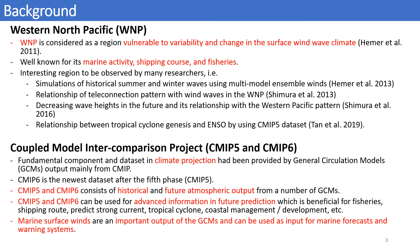The Western North Pacific study area is considered a region vulnerable to the variability and changes in the surface wind wave climate. Many studies have been done for wind wave modeling and wind wave climate projection for the study area. Some investigated the relationship between the teleconnection pattern and wind waves in the Western North Pacific, reporting a decreasing wave trend in the future and its relationship with the Western Pacific pattern.